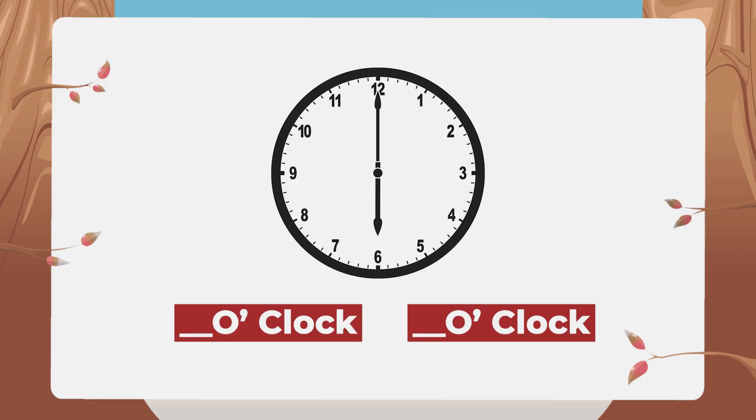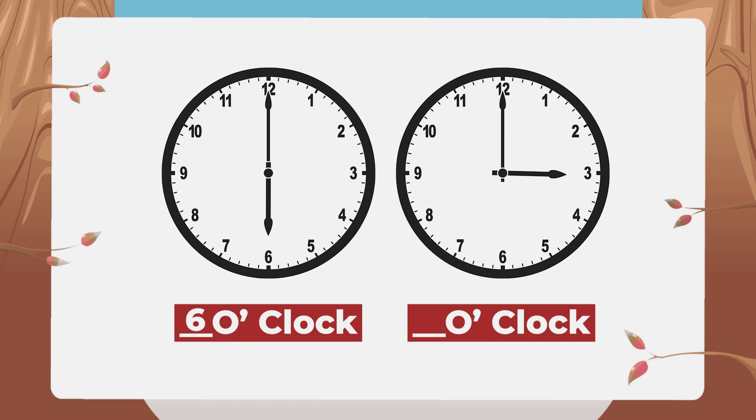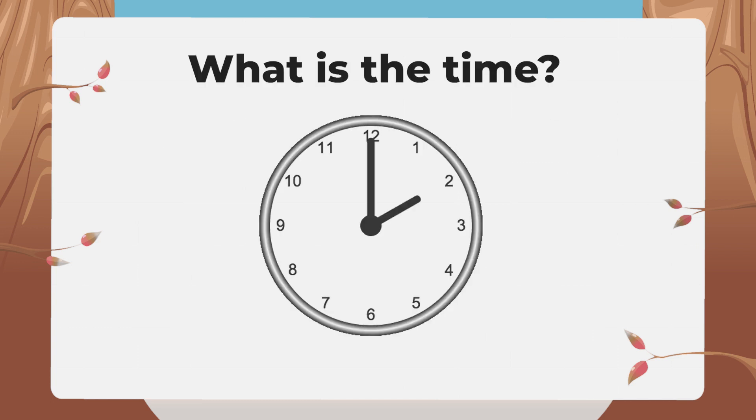Look at this clock — the short hand is on 6 and the long hand is on 12, so the time is 6 o'clock. In another example, the short hand is on 3 and the long hand is on 12, so the time is 3 o'clock. Now look at this clock — it is 2 o'clock. Since Chintu's school dispersal time is 2 PM, Chintu can go home.